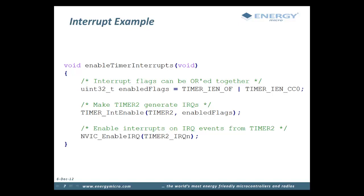Here we see some example code that enables interrupts. In this example, we enable two interrupts for the timer 2 peripheral: the interrupt for overflow and the interrupt for compare capture channel 0. Each interrupt flag corresponds to one bit in the interrupt enable register and can therefore be OR'd together and enabled at the same time. We use the emlib function TIMER_IntEnable to enable the interrupts in the peripheral registers. This function takes two parameters: the first is the peripheral struct from CMSIS, and the second is a bit mask representing all the interrupts we want to enable. The last line enables the timer 2 interrupt line in the interrupt controller, and the only parameter to this function is the IRQ number. In the header files for the EFM32, there are globally defined constants for all the IRQs.